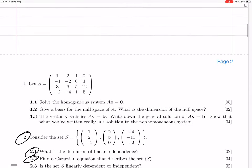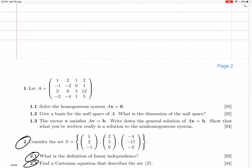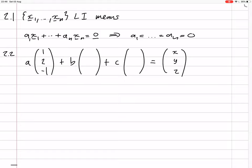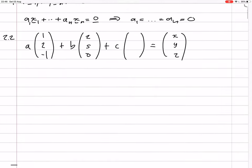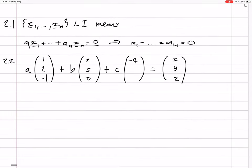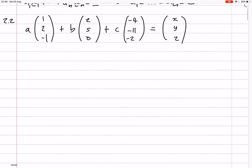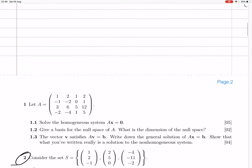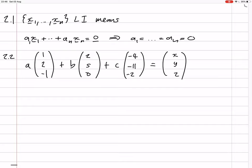So we need to take A times the first vector, plus B times the second vector, plus C times the third vector, equals the vector x, y, z. What are the vectors? 1, 2, minus 1. And then 2, 5, 0. And then minus 4, minus 11, minus 2.